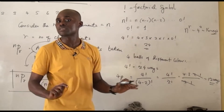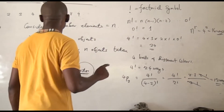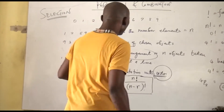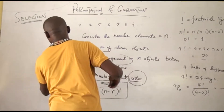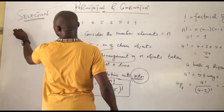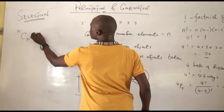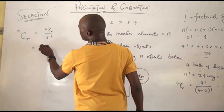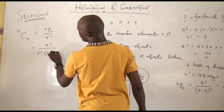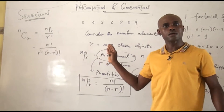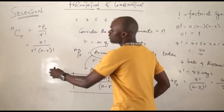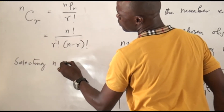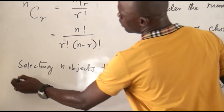Now we talk about combination. In combination we actually use the word selection. In selection, we have N combination R. The formula is NPR divided by R factorial — we knock out the redundancy. This is the same thing as N factorial divided by R factorial times N minus R factorial. So that is selecting N objects taking R at a time.